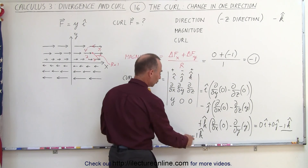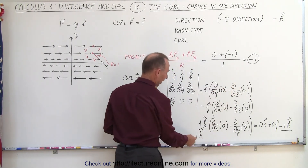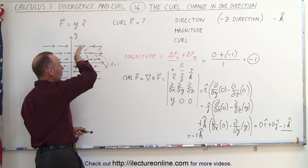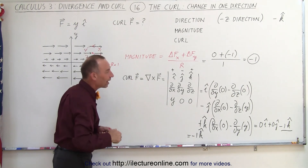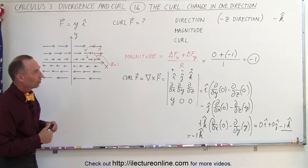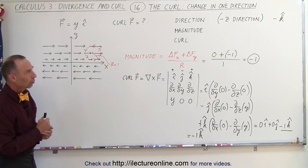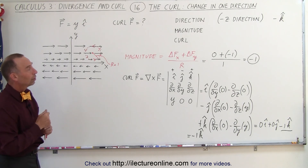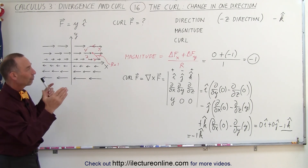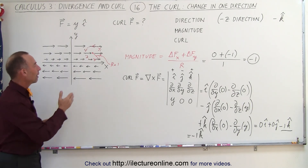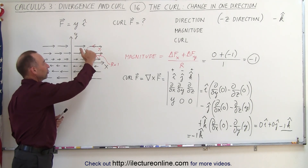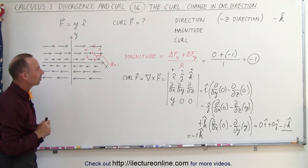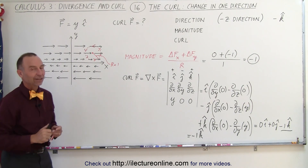Notice the magnitude is 1, as we predicted, and the sign is negative because the circulation is clockwise. That's how we figure out the direction of the circulation, which gives us the direction of the curl. And we find the magnitude by moving a certain distance in the x direction and y direction, observing how much the magnitude of the vector field changes. And that's how it's done.